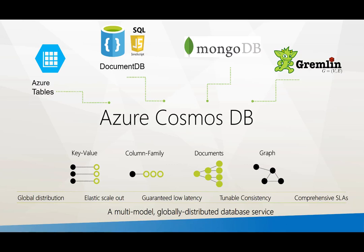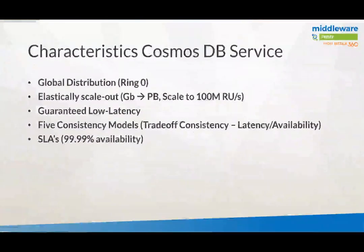It's multiple models, and probably in the future there are going to be more models within this service. Looking at the characteristics of the DocumentDB service: it's globally distributed, so you can find it in every region. It's kind of a ring zero service — that's really characteristic about this service.